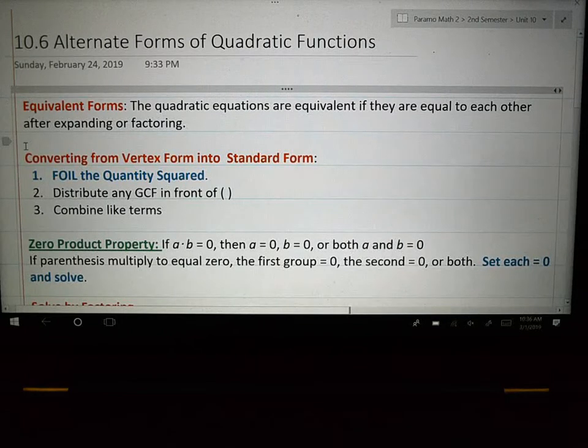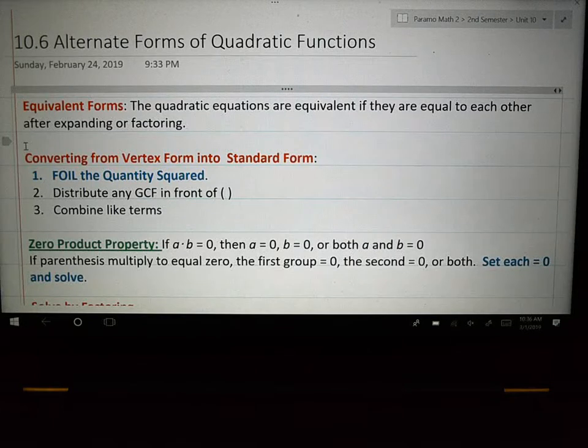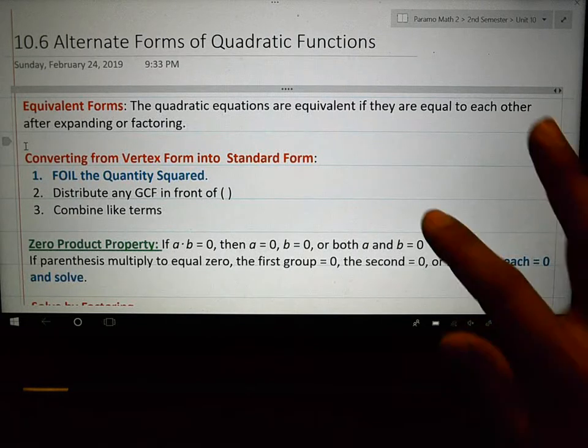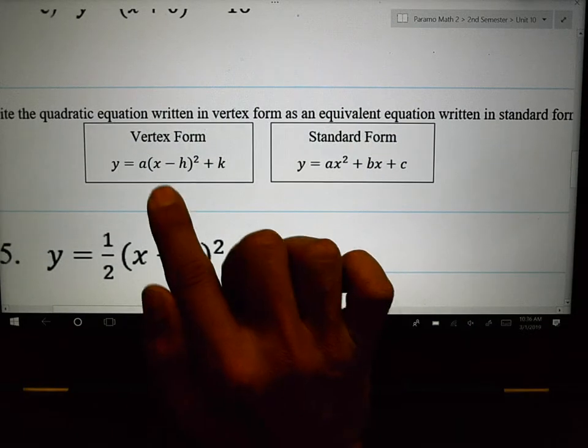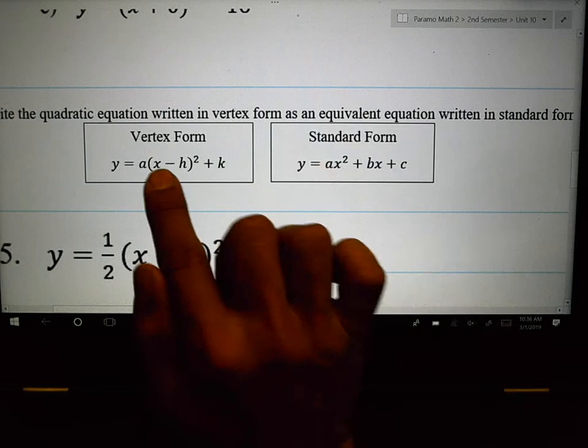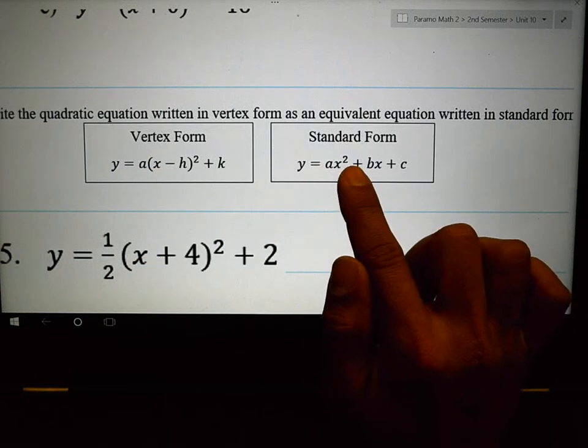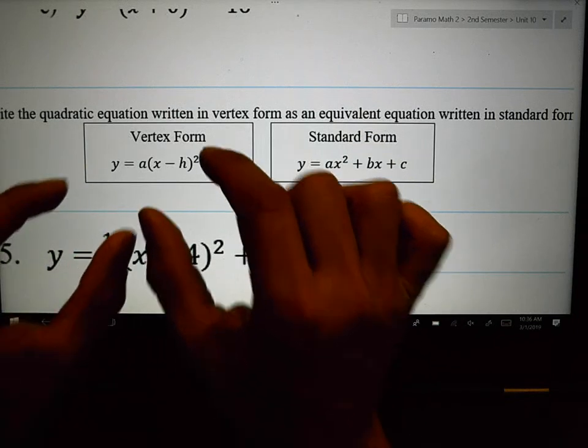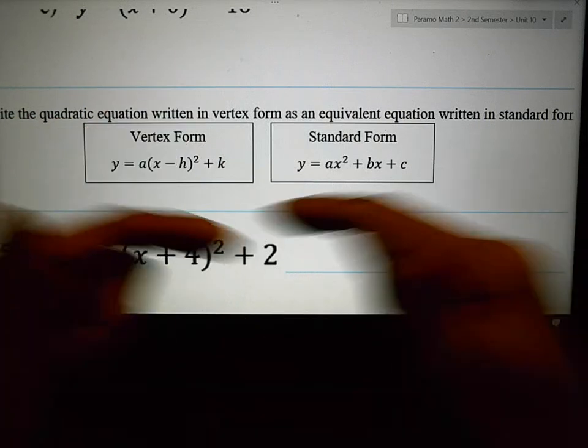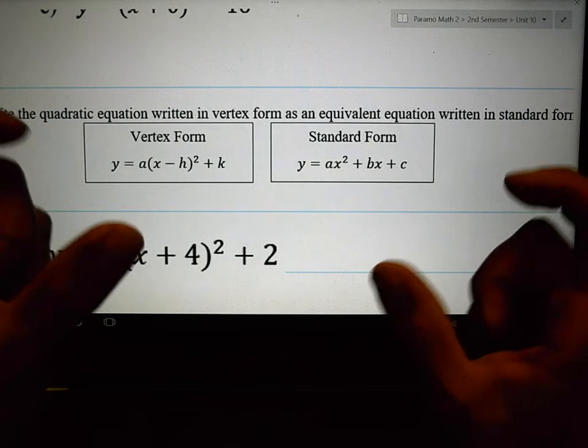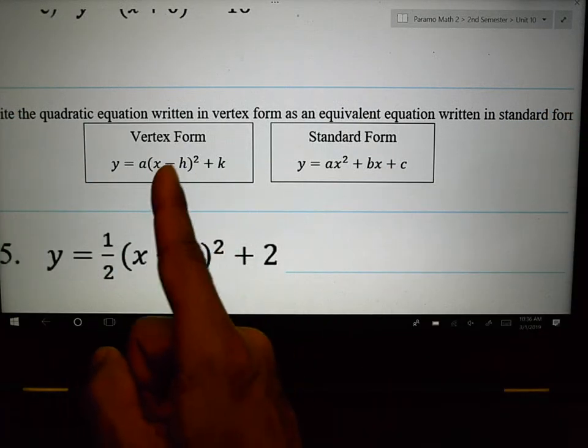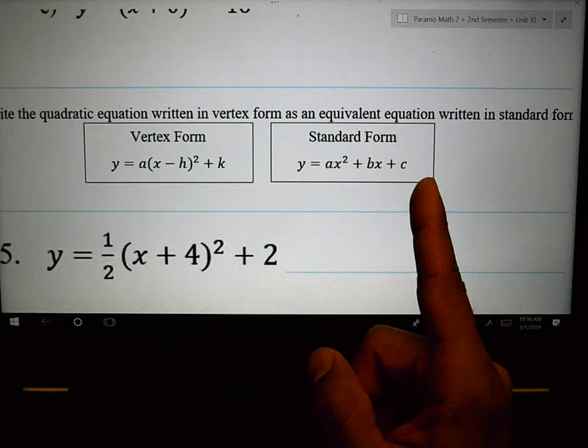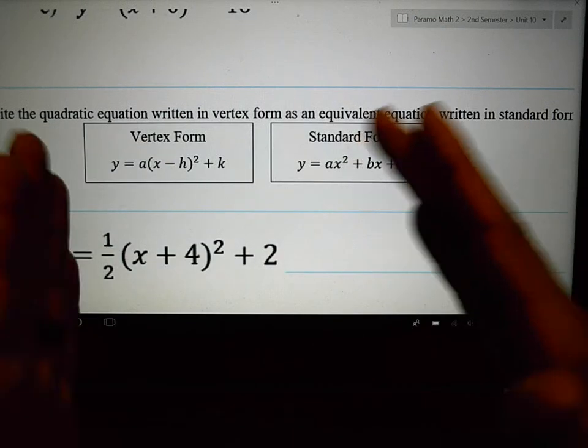In 10.6, we are taking our parabolas. We're taking those vertices and there's two different forms that we're going to be switching things from. We're going to be taking things that are in this form called vertex form and we're going to be switching them over to standard form. That's going to be like one of our major ideas is taking something that might be in this way and show you that it can also be written in the other way and they're still the same thing as each other.